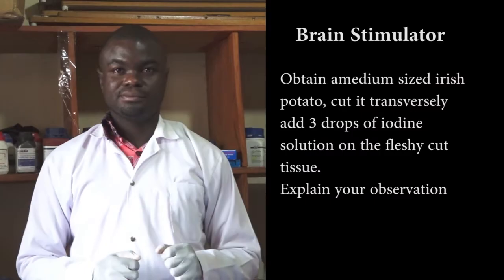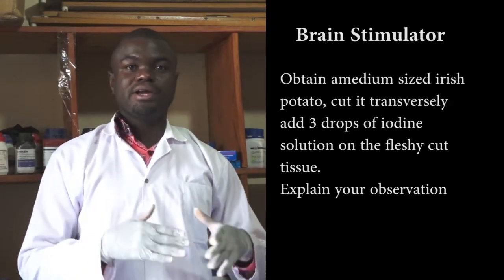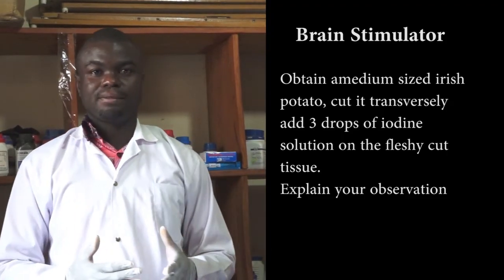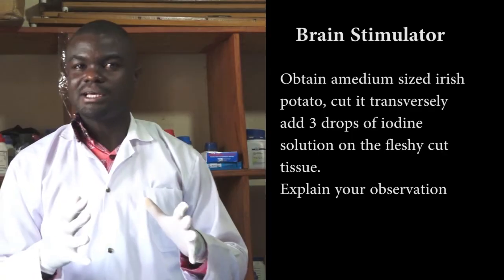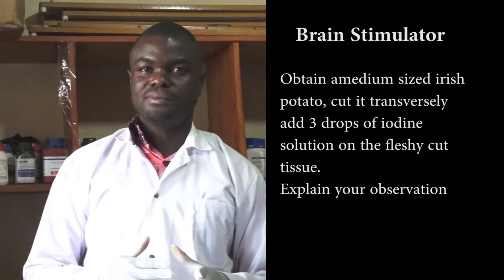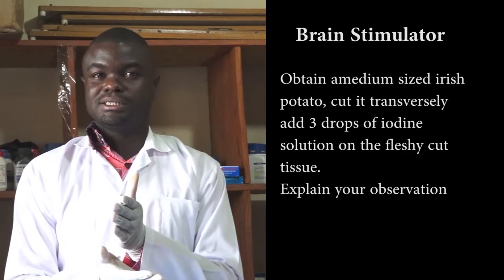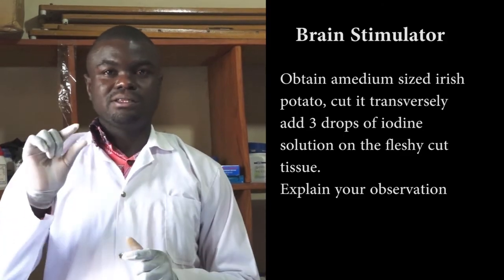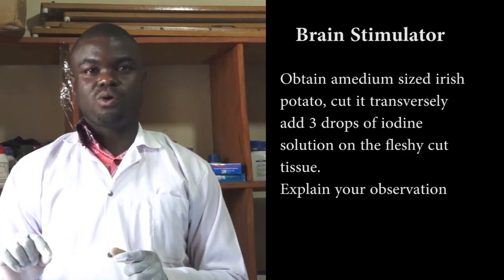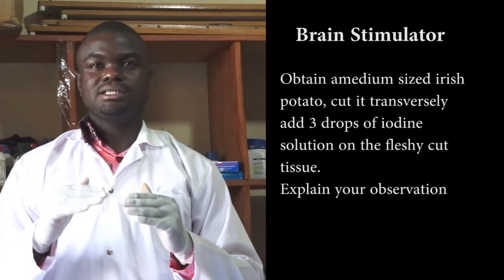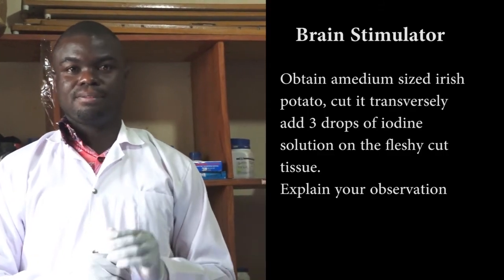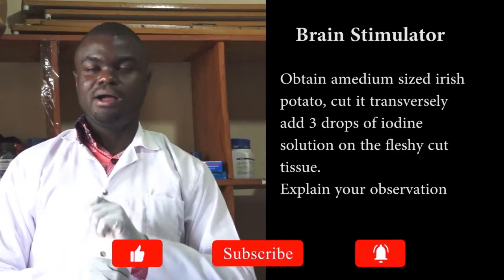So here is your brain teaser or one can call it a brain stimulator. Obtain a medium-sized Irish potato, cut it transversely, and add three drops of iodine solution on the flesh cut tissue. Explain your observation.